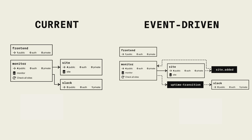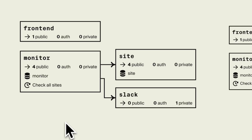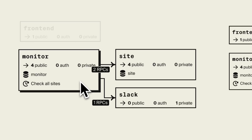Here we have two architectural diagrams — on the left side is our current system and on the right is how we want it to look when we are done. You can see that we have four services: front-end, monitor, site, and Slack. The filled-in arrows indicate that the monitor service is calling endpoints in both the site and the Slack service, so the monitor service has a hard dependency on these two services. We can also see that both the monitor and the site service have databases, and the monitor service has the cron job which checks the status of each site once every hour.